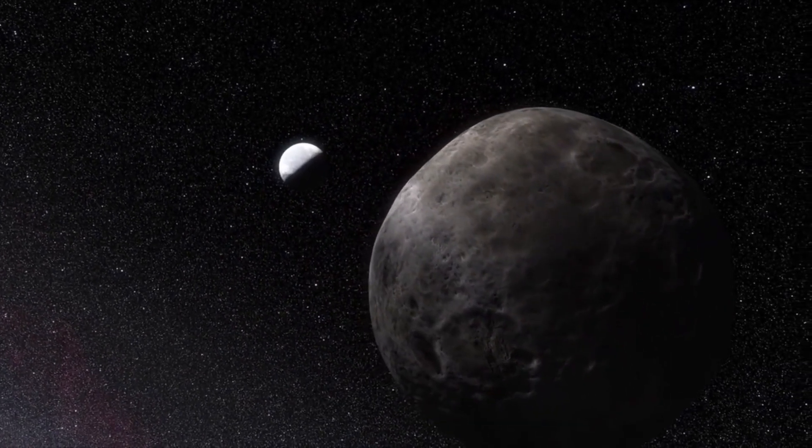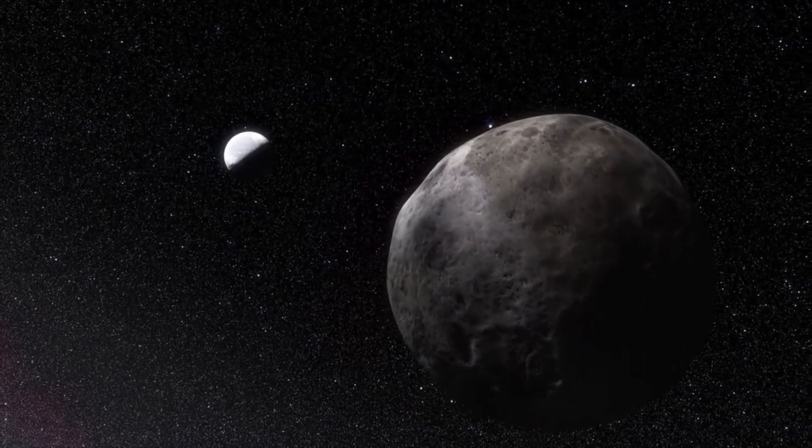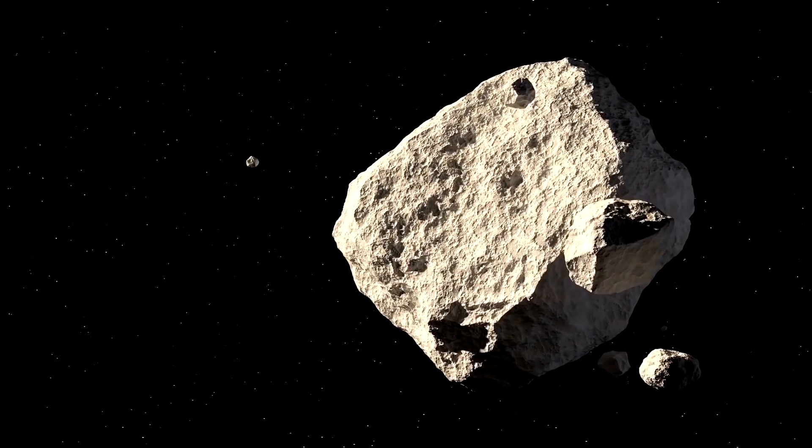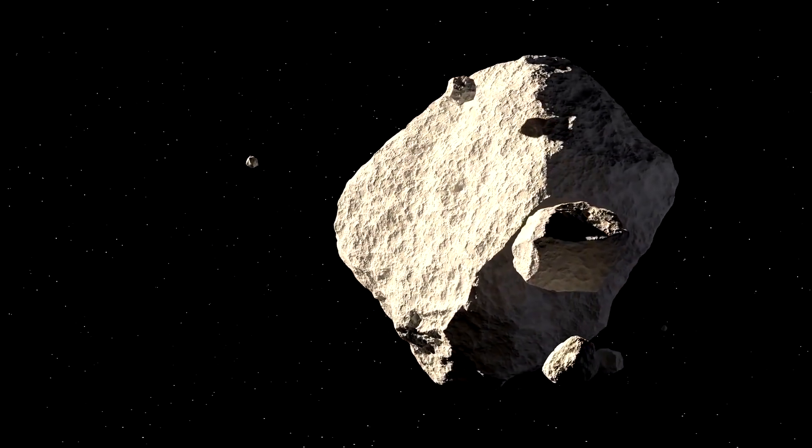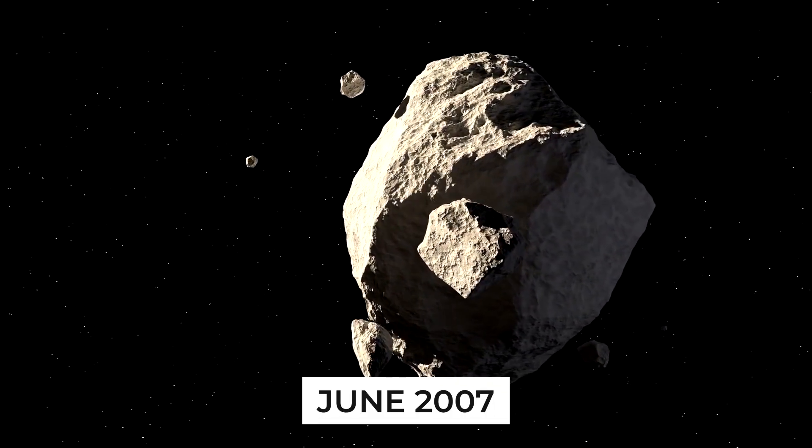Eris possesses a moon, which was eventually dubbed Dysnomia when more observations were made public in October 2005. Using Dysnomia's orbital observations, scientists were able to conclude that Eris had a mass higher than Pluto's in June 2007.